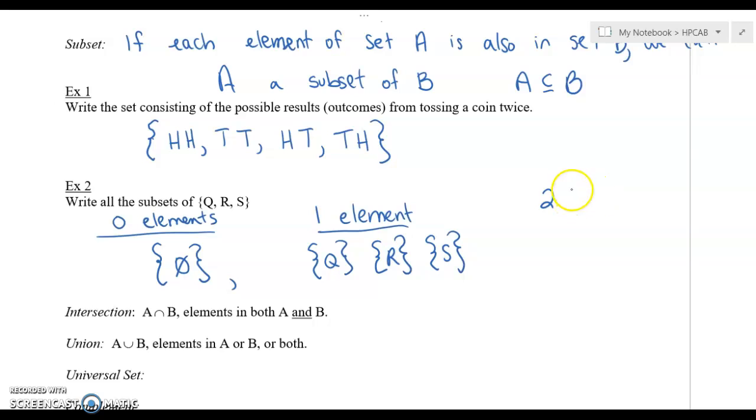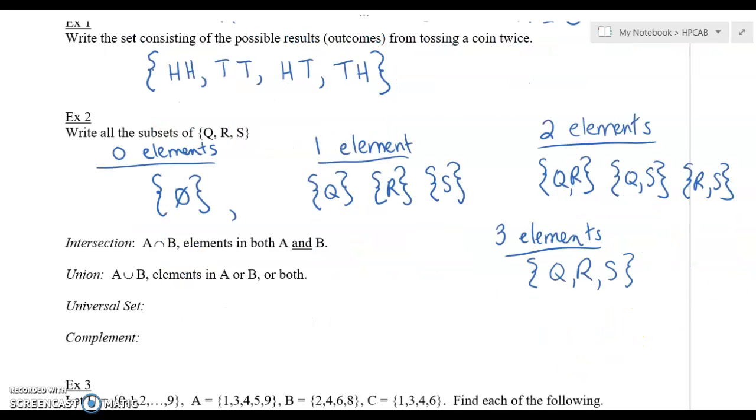And then we have the subsets that would have two elements. And if it's two elements, you could have Q with R, you could have Q with S, and we're just kind of listing them. So we put commas in between. We've got R with S and that's about it. Q with R, Q with S, and R with S. Those are the only subsets that would have two elements. We're not dealing with order at all. It's just what two letters could we put together. And then the last one is for our three elements. And there's only one possibility for that. That's to have Q, R, and S all in the same subset. So we've got Q, R, and S.